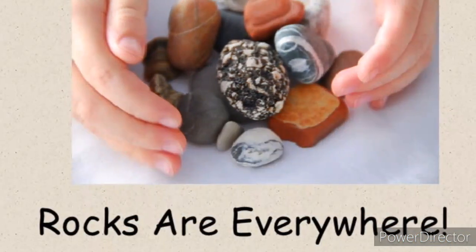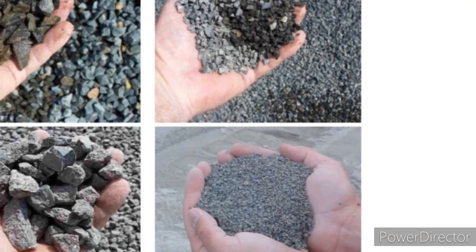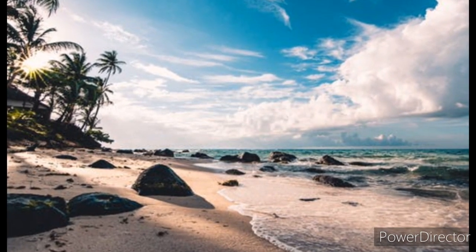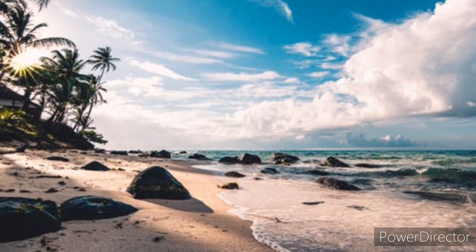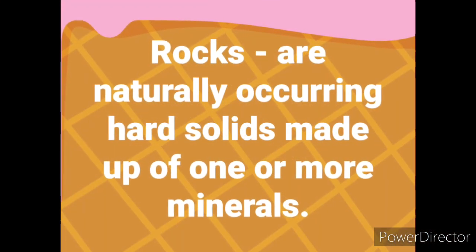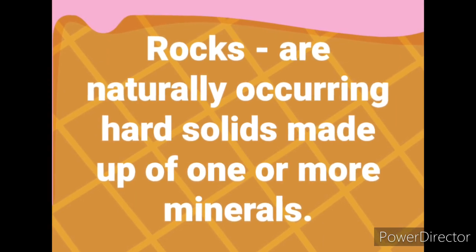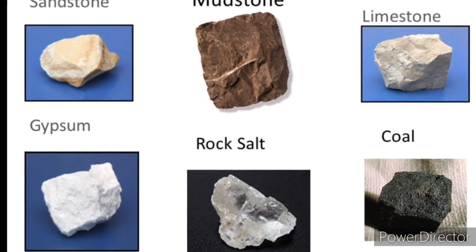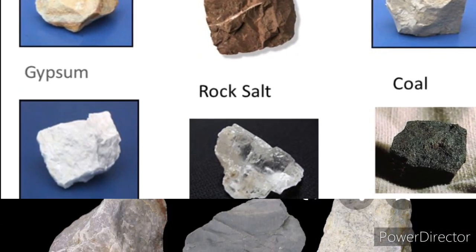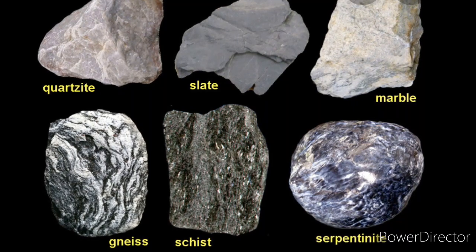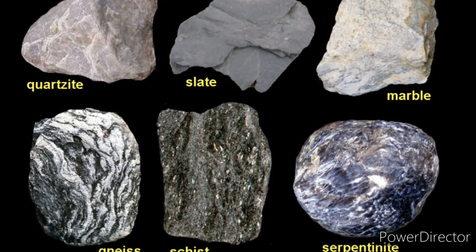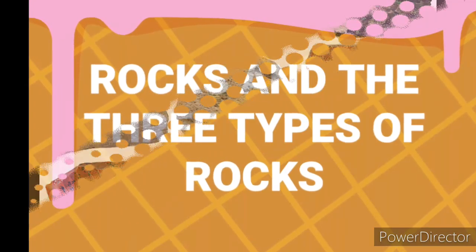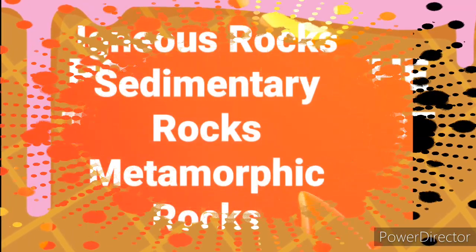Rocks are everywhere. They can be large or small, heavy or light. We are very familiar when we talk about rocks. But scientifically, how are these materials described? By definition, rocks are naturally occurring hard solids made up of one or more minerals. These objects can easily be identified because you can always find them anywhere. Rocks in all forms can be found all over the planet. Rocks come in different colors, shapes, and sizes. Take a look at the pictures. How are these rocks classified?